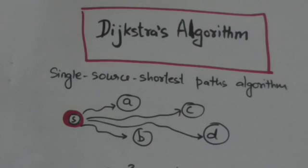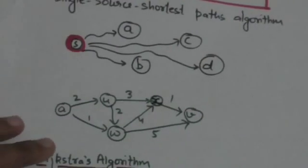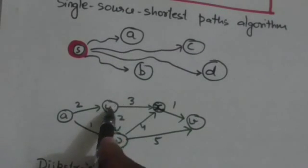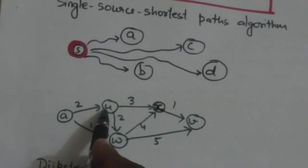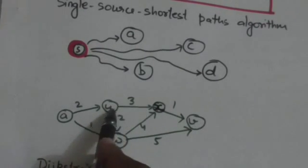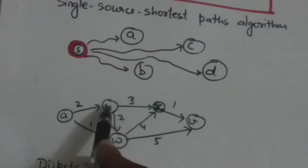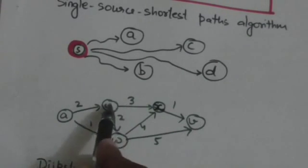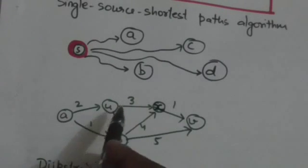What is the meaning of shortest path? In a weighted graph, the weight of a path is the sum of the weights of its constituent edges. For example, the path u→x→v has weight equal to the sum of weights of edges ux and xv, which is 3 plus 1, equal to 4. So the weight of path u→x→v is 4.